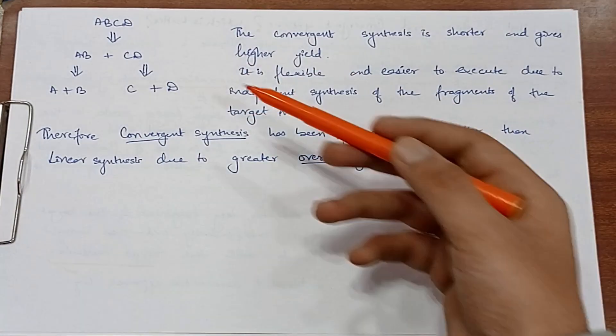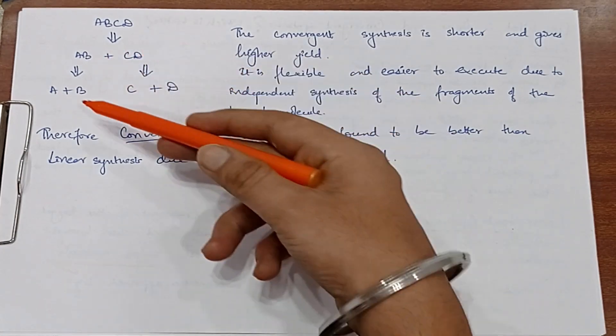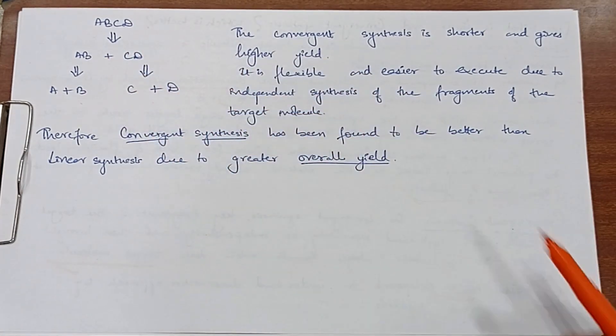ABCD compound jo hai usko break kar humne AB or CD mein. Or A plus B or C plus D. Hamare paas alag alag compounds aa gaye hain. Okay? Yehi mein kya raha tha.